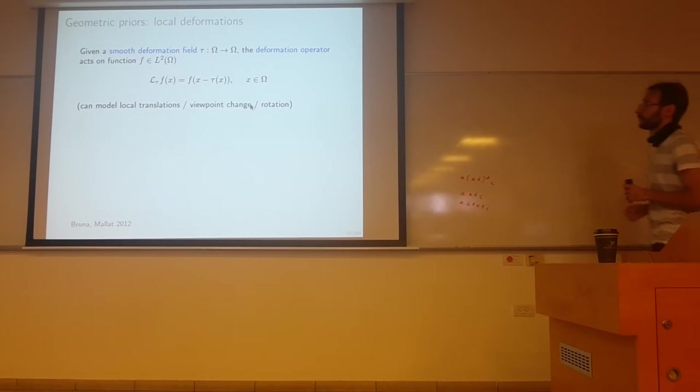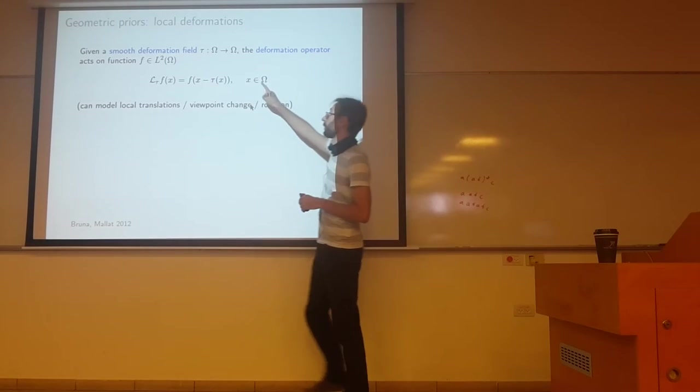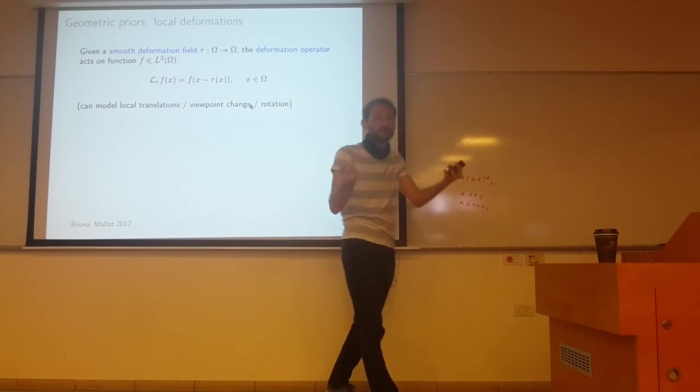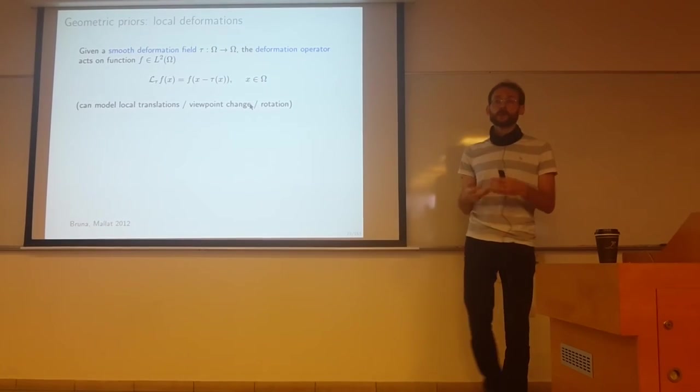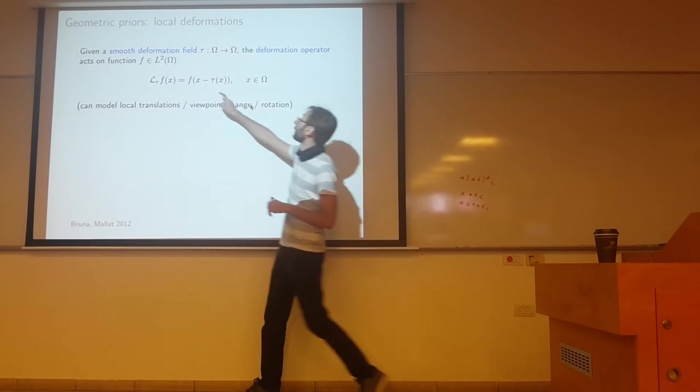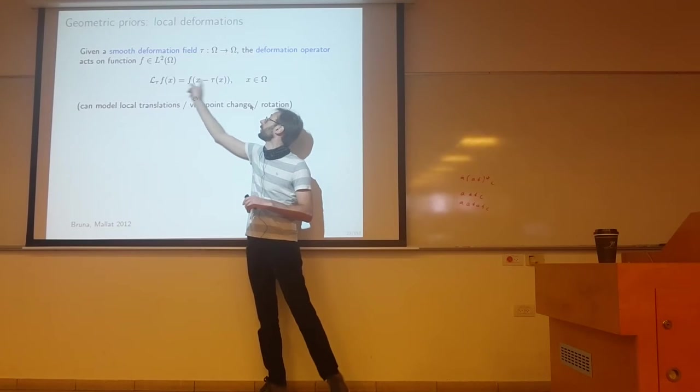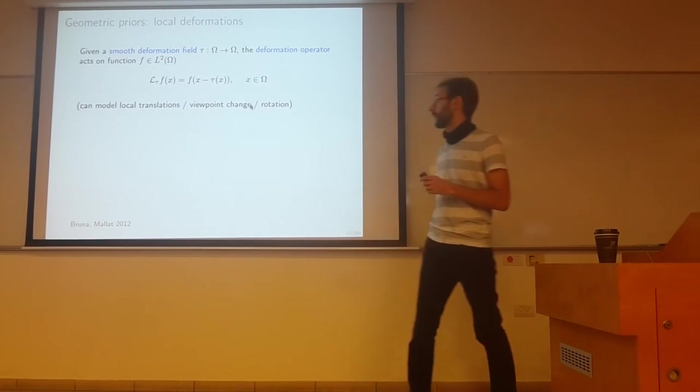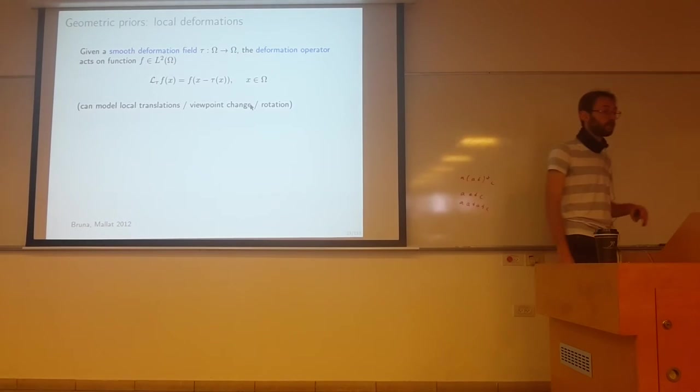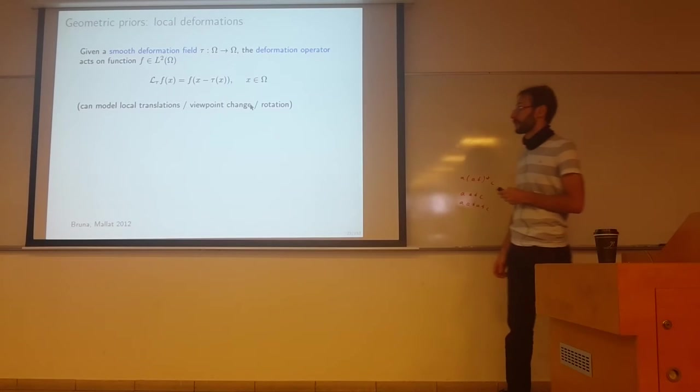This can be generalized to some non-linear operations. In general, we can talk about a smooth deformation field tau that shuffles the pixels of your image - a deformation field of the domain omega. We have the deformation operator L_tau applied to our function, which deforms its coordinates. This is a simple but good model for local translations, rotations (which can be locally represented this way), viewpoint change, perspective transformations, and so forth.